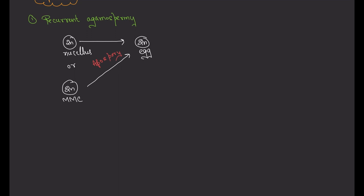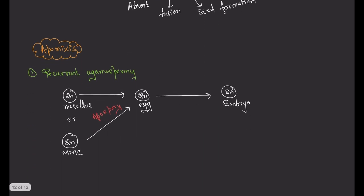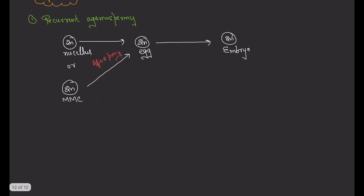Through apospory, the diploid nucellar cell or diploid megaspore mother cell is directly converted into a diploid egg. This diploid egg then develops into a diploid embryo — that is embryo formation without fertilization, which is the process of parthenogenesis. This embryo is present within the seed, so viable seeds are produced — seeds that are able to form new plants.